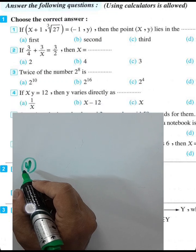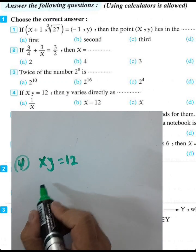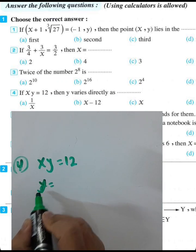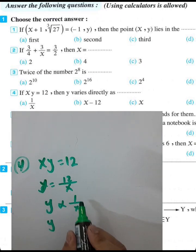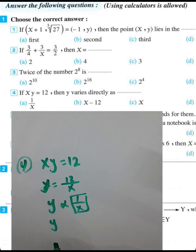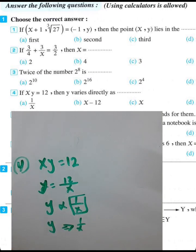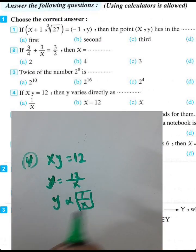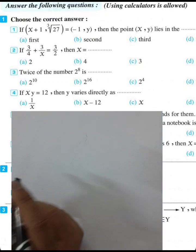Question 4: If x times y equals 12, then y varies inversely with what? We can write y = 12/x, so y varies inversely with x, and y varies directly with 1/x. The answer is that y varies directly with 1/x, not directly with x — x only varies inversely.